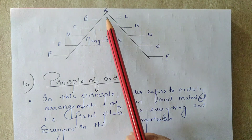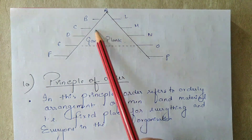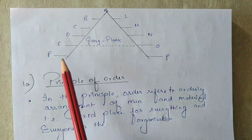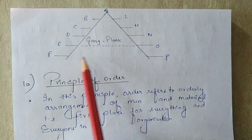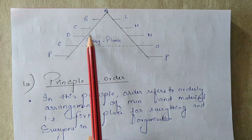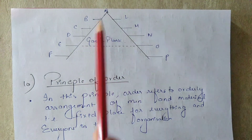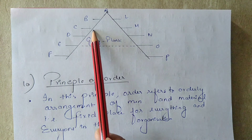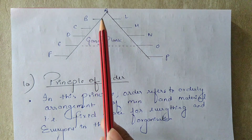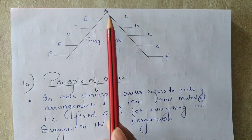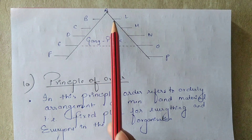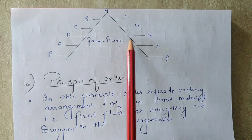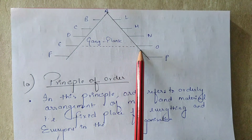In the diagram, A has two lines of authority. If E wants to contact O, he will have to follow the chain — going through D, then D to C, C to B, B to A, then A to L, L to M, M to N and finally N to O.